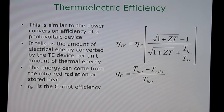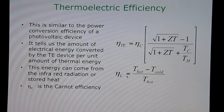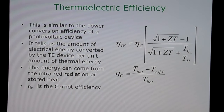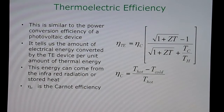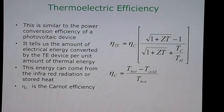TC is the temperature of the cold side in Kelvin, and T_H is the temperature of the hot side in Kelvin. The Carnot efficiency eta_C is simply (T_hot minus T_cold) divided by T_hot, which can also be written as 1 minus T_cold over T_hot.